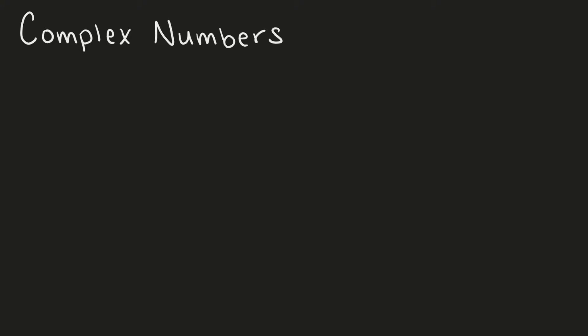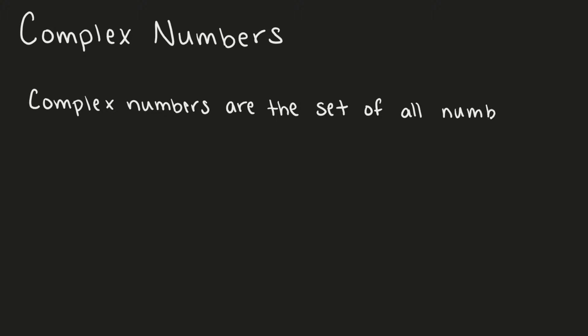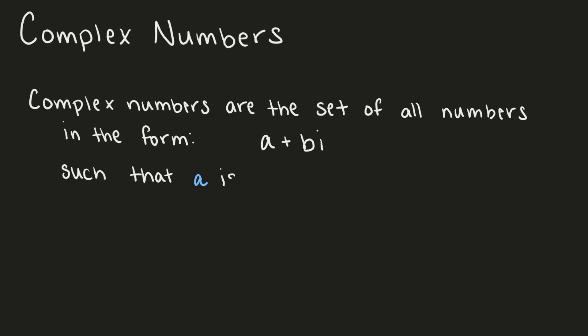First, let's define complex numbers. Complex numbers are the set of all numbers in the form A plus Bi, such that A is a real number and Bi is an imaginary number.